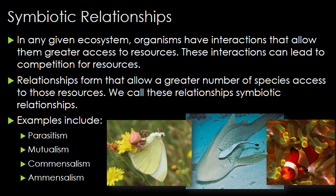Symbiotic relationships are a broad range of species interactions. Organisms require a certain amount of food, water, space, and shelter to survive. When the availability of any of these resources in a given area is less than what the various populations need, it becomes a limiting factor. Species can interact to allow greater access to resources. Parasitism, mutualism, commensalism, and amensalism are the four most common types of symbiotic relationship, and you should be familiar with at least two of these.